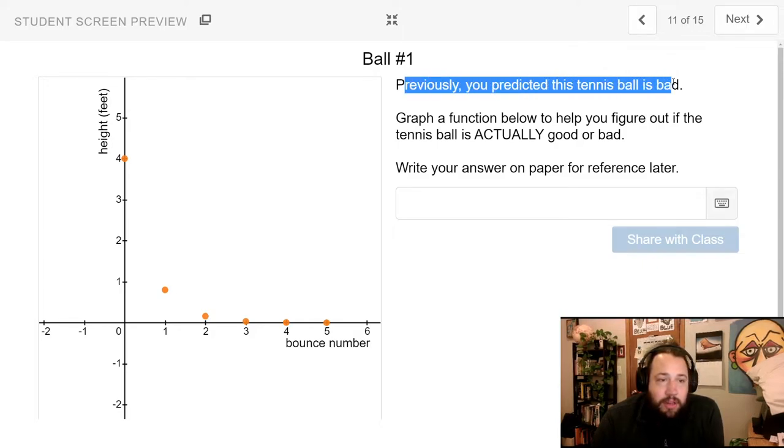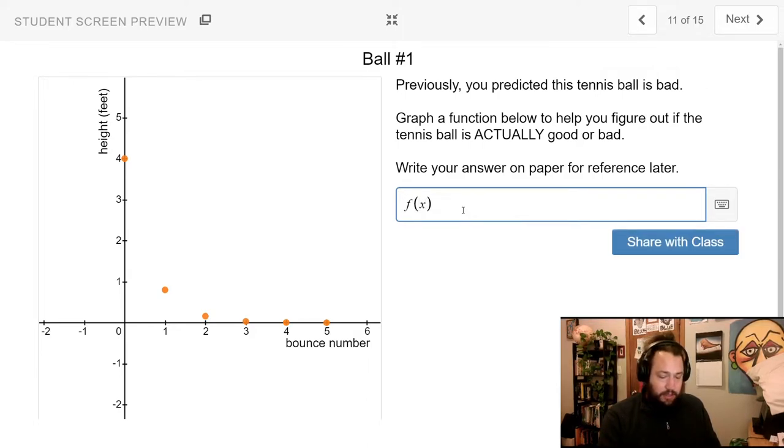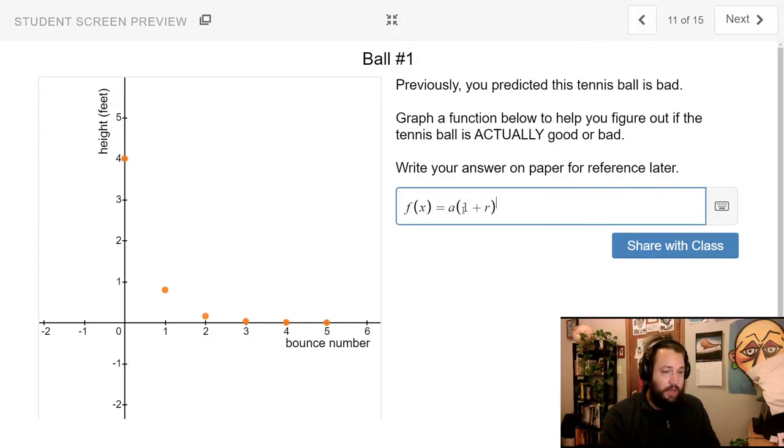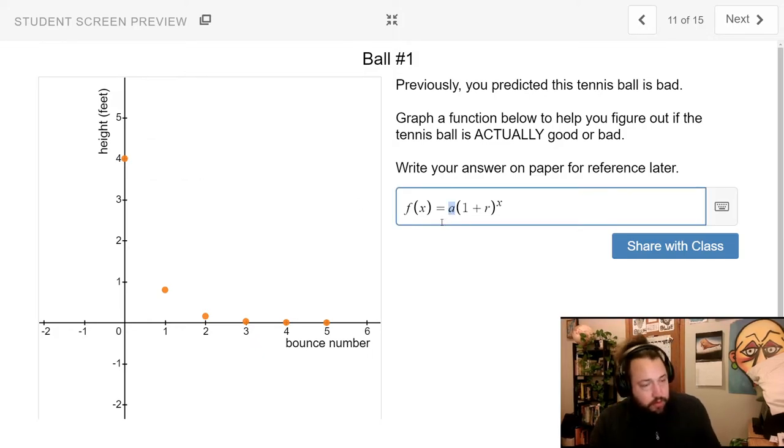So, previously you predicted this tennis ball is bad. Well, let's put in the equation of an exponential equation. So, we can say f of x equals, and then I'm going to have my a parentheses 1 plus r parentheses raised to the x. Now, in this situation, I know that I'm going to start at this value, which is 4. So, I'd replace my a with a 4.